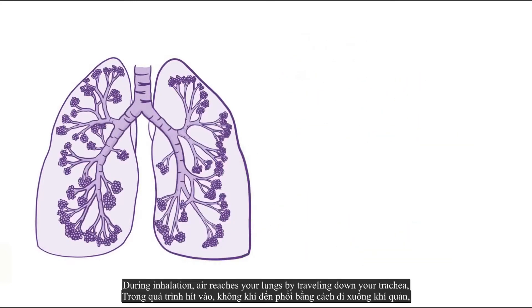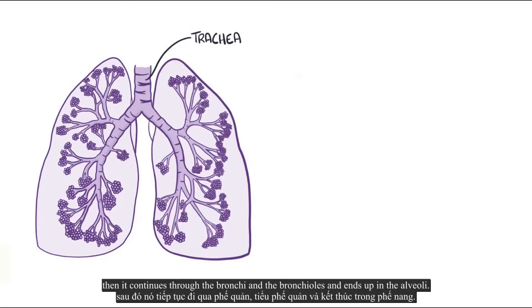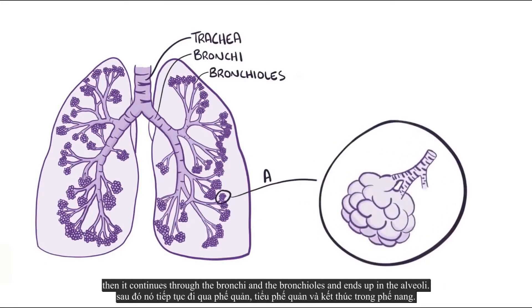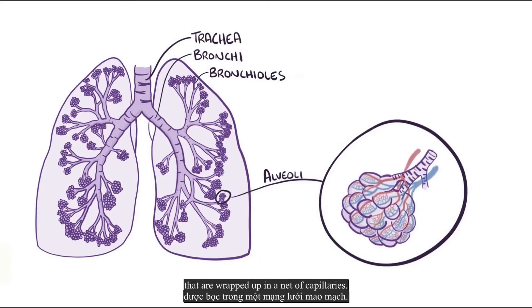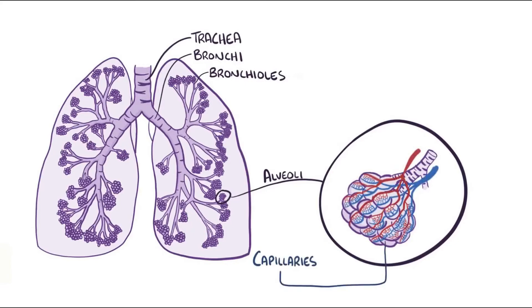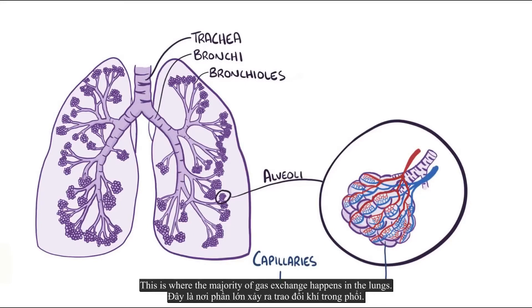During inhalation, air reaches your lungs by traveling down your trachea, then it continues through the bronchi and the bronchioles and ends up in the alveoli. The alveoli are tiny air sacs that look like tiny clumps of grapes that are wrapped up in a net of capillaries.